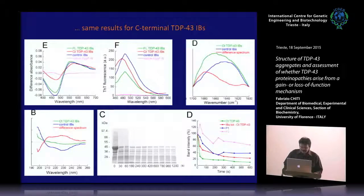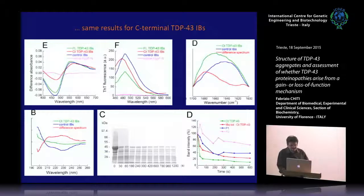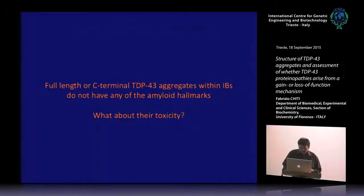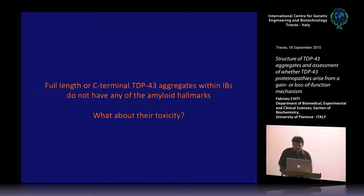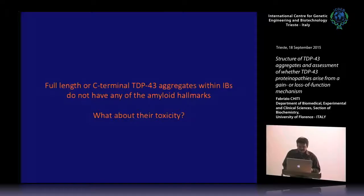The same results were obtained for inclusion bodies containing the C-terminal fragment of TDP43. The conclusion is that both full-length and C-terminal TDP43 aggregates present within the inclusion bodies do not have any of the amyloid hallmarks. We also studied the toxicity of this material — specifically of the TDP43 protein present in the inclusion bodies.